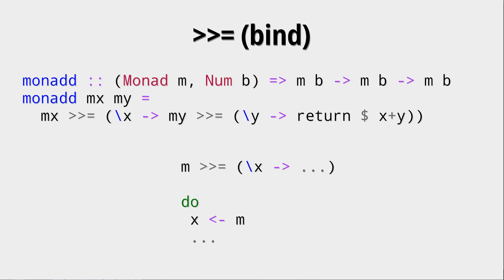And it's the do notation. Because if you have a binding where the monad m gets bound to this anonymous function with the argument x, this is the same in do notation as saying x left-arrow m, which says nothing but: take the internal value of m and put it into x and then do something else. But remember, if there is a faulty state in our monad — so for example if the maybe is Nothing or if an IO has some internal exception — then because the do notation is nothing but the bind operator, we actually propagate this error through.